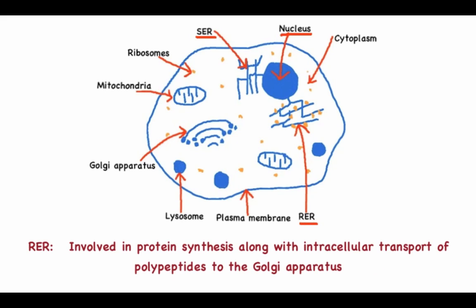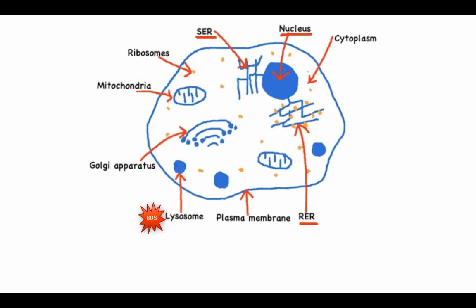The rough endoplasmic reticulum is associated with ribosomes and is involved in protein synthesis along with intracellular transport of polypeptides to the Golgi apparatus. Ribosomes play a primary role in protein synthesis and are necessary for it to occur.